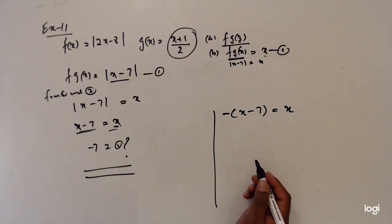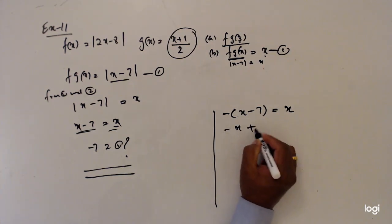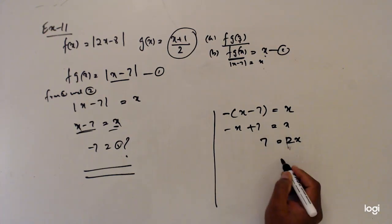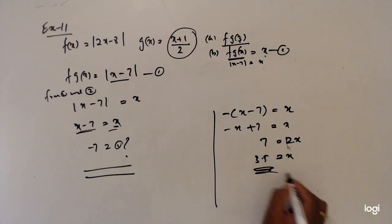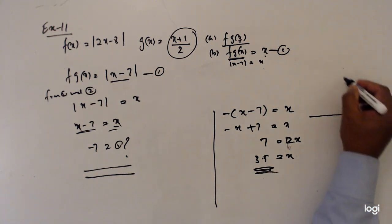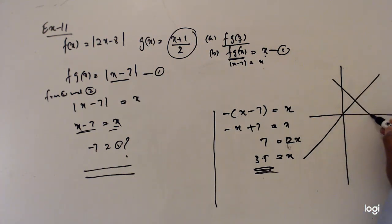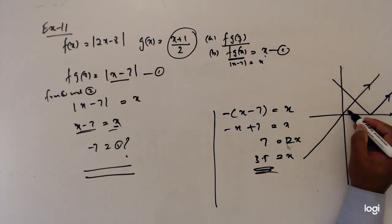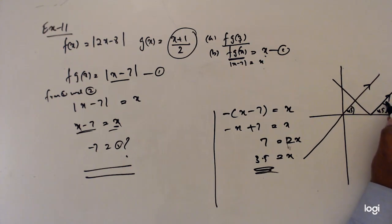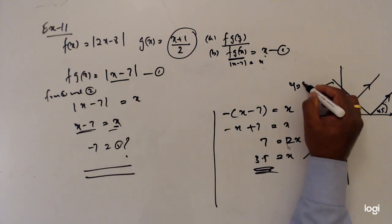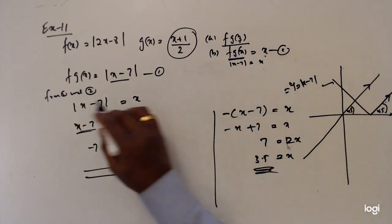For the negative option: -(x-7) equals x, so -x plus 7 equals x, giving 2x equals 7, so x equals 3.5. We have one answer: x equals 3.5. Graphically, y equals x is a 45-degree line, and y equals |x-7| intersects it only at x equals 3.5.